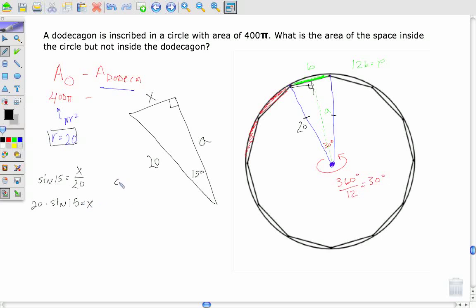Alright. I can figure out what a is by using cosine instead. So cosine of 15, cosine is adjacent over hypotenuse. That's going to be a over 20, or 20 times cosine of 15 is equal to a.